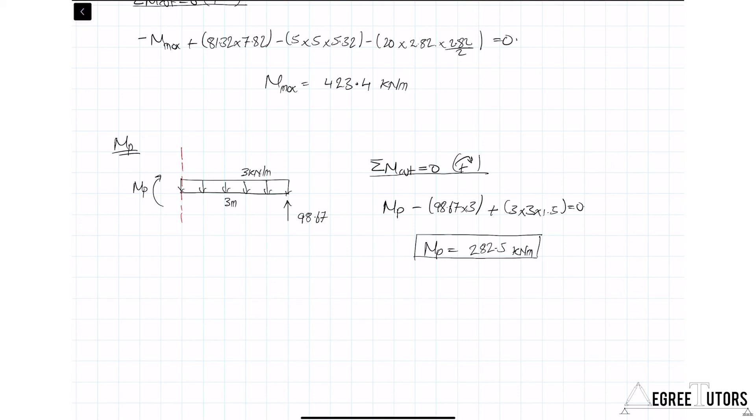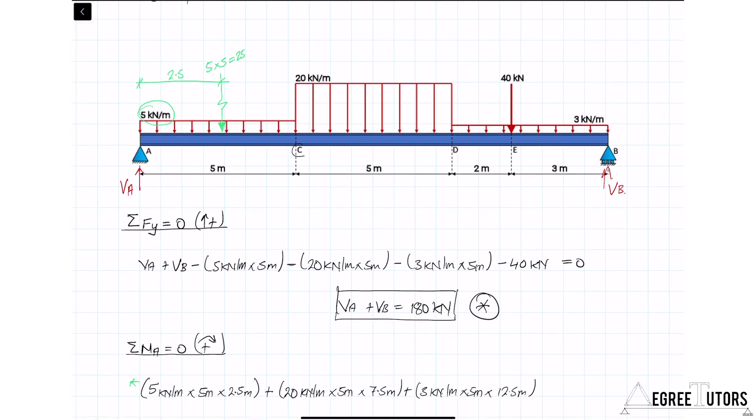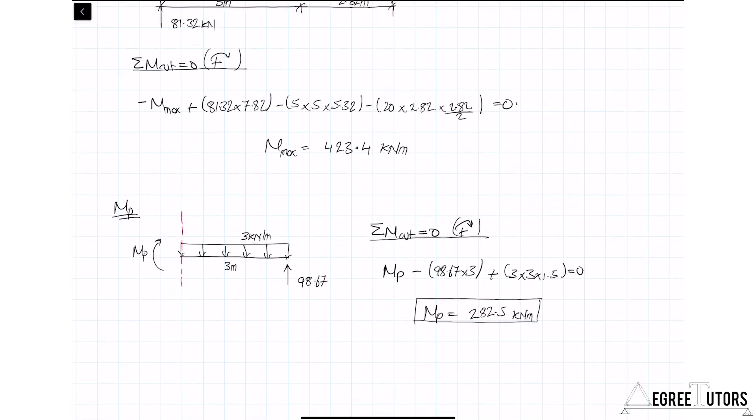In the next video, what I want to do is come back and determine an equation to describe the bending moment between C and D. Then I want to differentiate that equation to identify the location of the maximum bending moment and confirm for ourselves, through a different method, that the max bending moment is indeed 423.4. So instead of looking at where the shear force is zero and just evaluating the bending moment at that point, let's try and determine the equation for bending moment, differentiate that, let that equal to zero to find the location of the max, and again evaluate the max moment. Just a little practice for us really—not essential, but useful. Take a quick break and we'll come back in the next video and work that out.